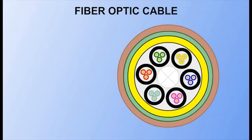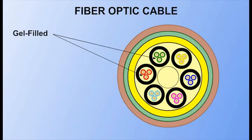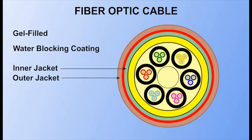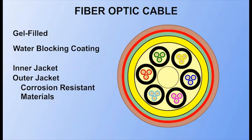Fiber cable that is used outdoors is normally filled with a waterproof gel. The buffer tubes may also contain this gel, as well as a water-blocking coating between the inner and outer jackets. Both inner and outer jackets are made of materials designed to resist corrosion and add greater protection to the cable.